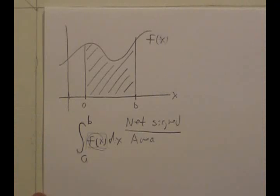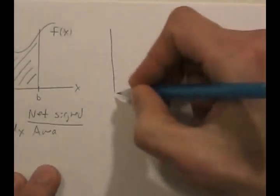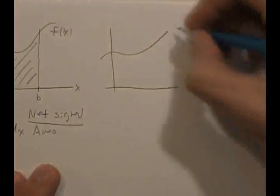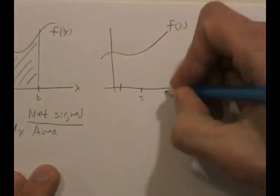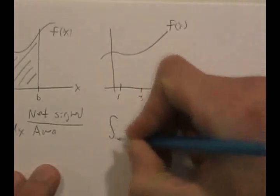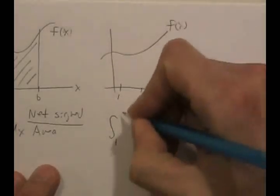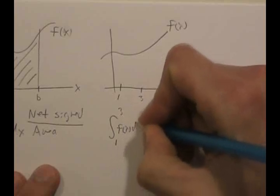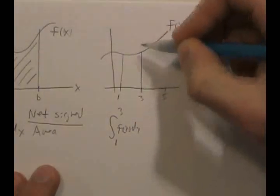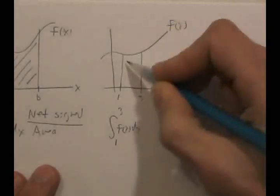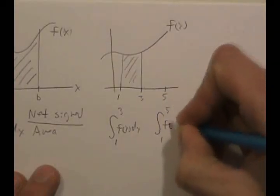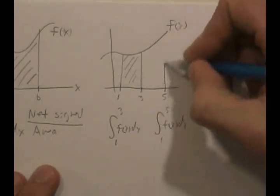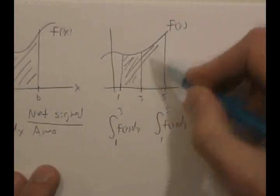I want to do a couple of examples of what this could mean with unspecified functions. If I have a function here — call this F of X — and say this is 1, 3, and 5 on the x-axis. If I write the definite integral from 1 to 3 of F of X DX, that's a reference to this area here. It stands for the area of this region. And if I wrote the integral from 1 to 5 of F of X DX, that would be a reference to the area from X is 1 to X is 5 — all of this.